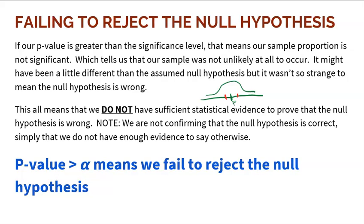It doesn't mean the null proportion is right — I just don't have the evidence. I do not have sufficient statistical evidence to prove that the null is wrong. We are not confirming that the null hypothesis is correct; we simply do not have enough evidence to say otherwise. This is when we fail to reject the null.